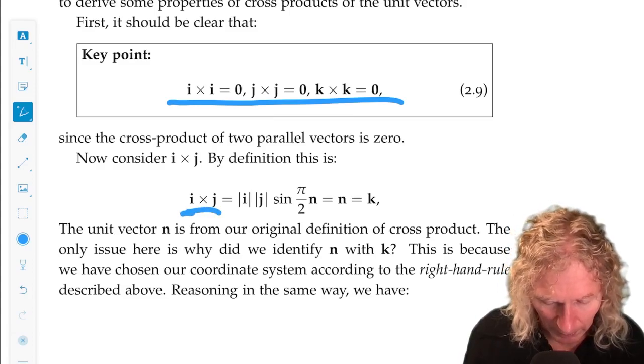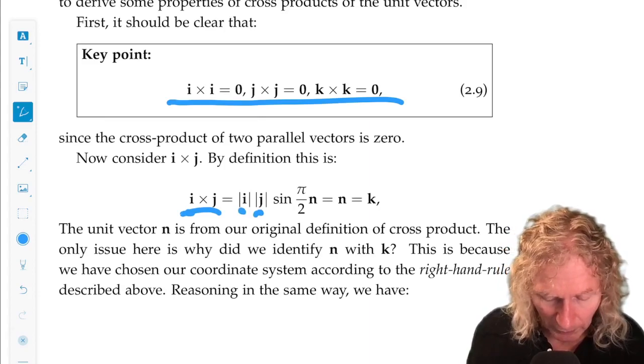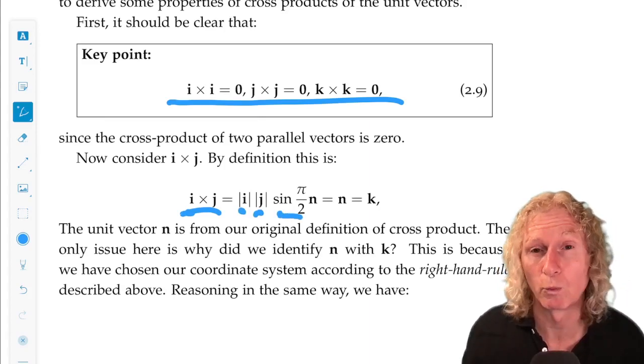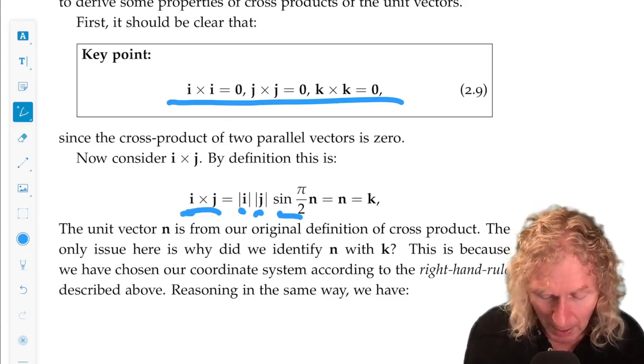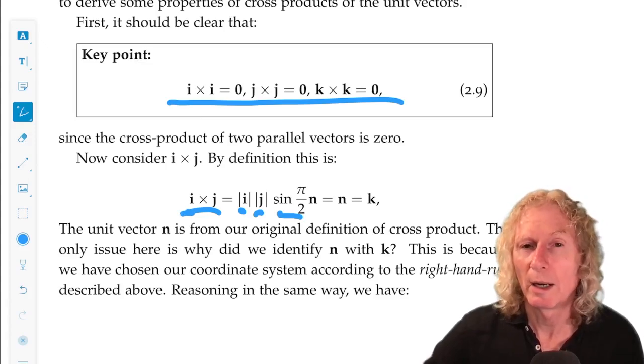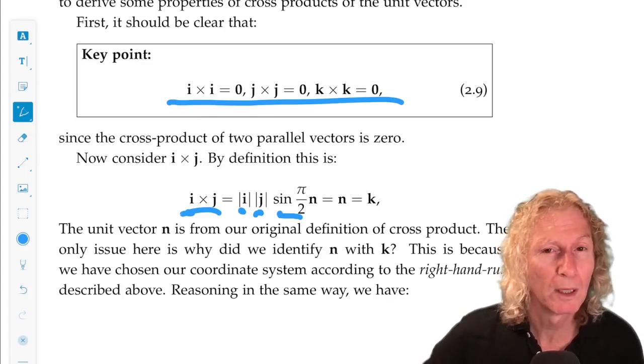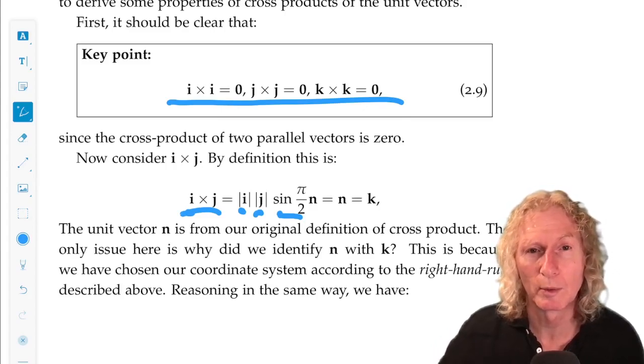Cross product of i and j, for example, is the length of i times the length of j, and those are both one, times the sine of the angle between them, pi over two, that's one. Now here's the key point.